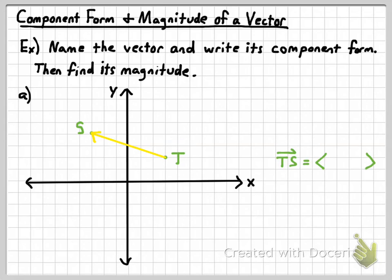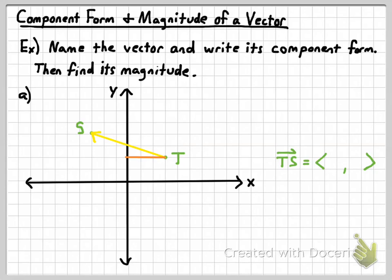Notation here is super important. You see me putting these little brackets, which are very important. When you're trying to write the component form for a vector, what you're trying to do is describe the direction of the vector. Remember, a vector is a quantity that has direction and magnitude, so the component form tells you the direction. It tells you how far left or right from the initial point you go and how far up or down you go to get to the terminal point. For vector TS, the horizontal component — we start at T and go to the left — is six units.